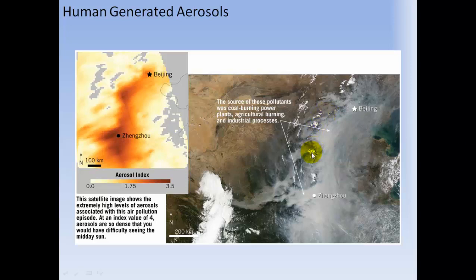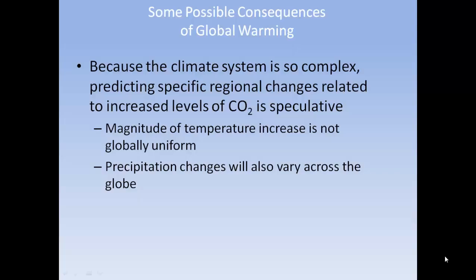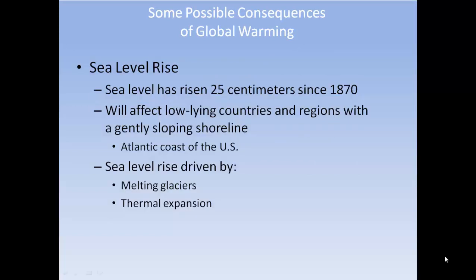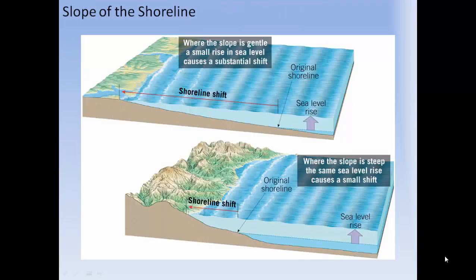Human-generated aerosols come from coal burning, power plants, agricultural burning, and industrial processes, and are concentrated near human populations. Because the climate system is so complex, predicting specific regional changes relative to increased CO2 is speculative. The magnitude of temperature increase is not globally uniform, and precipitation changes will also vary across the globe. Sea level has risen 25 centimeters since 1870, affecting low-lying countries and regions with gently sloping shorelines like the Atlantic coast of the United States. Sea level rise is driven by melting glaciers and thermal expansion — where the slope is gentle, a small rise in sea level causes a substantial inland shift of the shoreline.